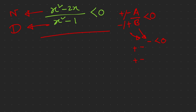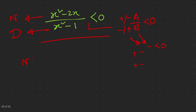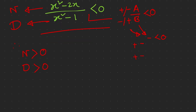This kind of problem seems complex, but if you can successfully analyze the sign then it's very easy. To analyze the sign, we consider the numerator greater than zero and the denominator greater than zero. This is not the actual inequality — we're just using it to understand the sign. So N is x squared minus 2x, and D is x squared minus 1, both considered greater than zero.